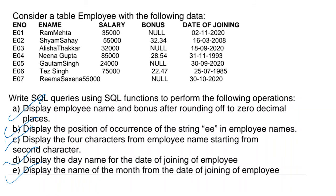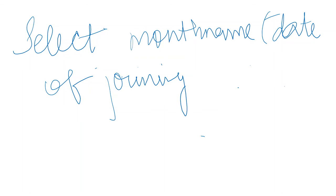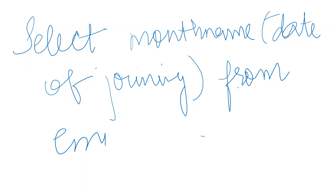The last question is: display the name of the month from the date of joining. This is again repeating — in one sample paper, DAYNAME and MONTHNAME appear two to three times, so it is very easy. We'll write: SELECT MONTHNAME(date_of_joining) FROM employee. This is the simple query for this question.